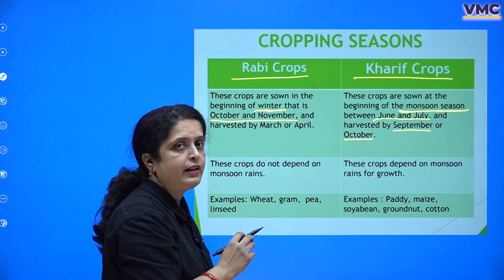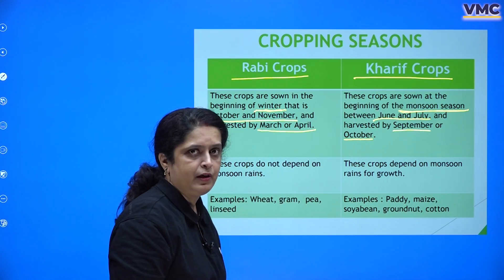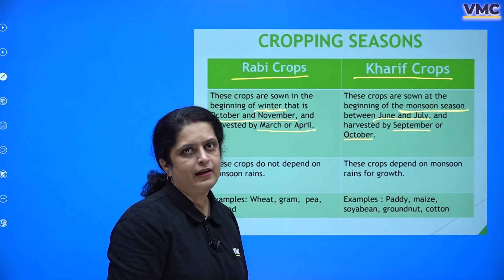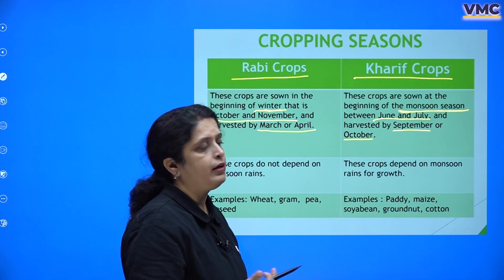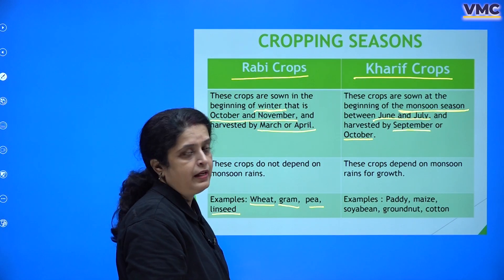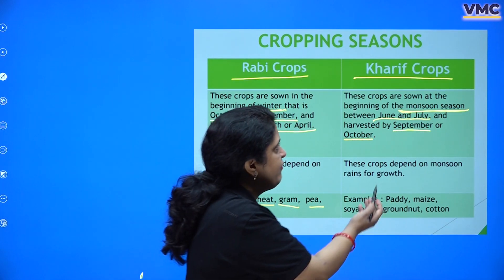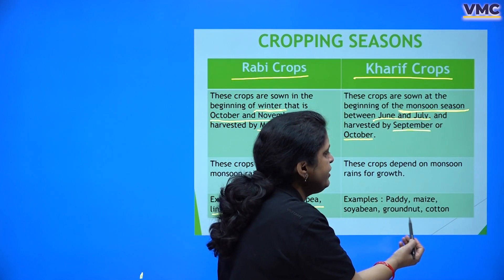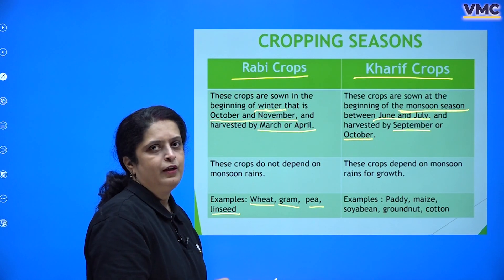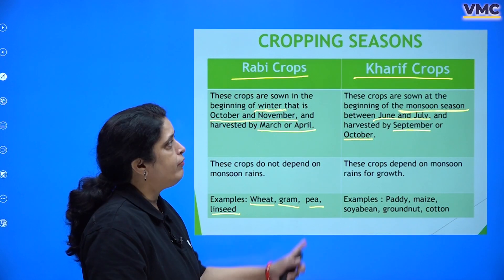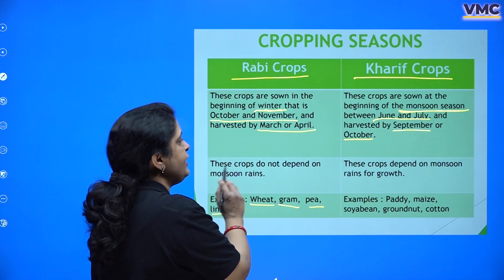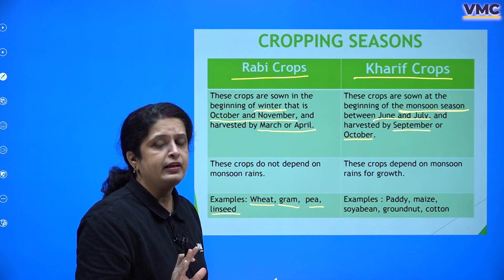Rabi crops are harvested by March and April. So the pattern is: as soon as the rains start, Kharif crops are planted and harvested at the onset of winter. After their harvest, Rabi crops are planted — these are winter crops. For example, wheat, gram, pea, and linseed are Rabi crops. Paddy, maize, soybean, groundnut, and cotton are Kharif crops. Paddy fields, as you may have noticed, have water up to the knees during sowing — a very common example of a Kharif crop. Kharif crops depend on monsoon rains, while Rabi crops depend on the normal winter season with no monsoon dependency.